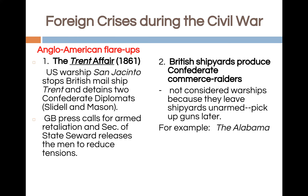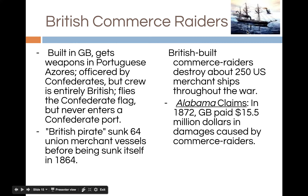Foreign Crisis During the Civil War: The Trent affair occurred in 1861, when a Union warship stopped a British mail steamer, the Trent, and removed two Confederate diplomats who were heading to Europe. Britain started to send troops into Canada in order to prepare for any Union backlash. President Lincoln freed the Confederate prisoners. The British shipyards were unknowingly producing Confederate commerce raiders — the British ships left their ports unarmed, picked up weapons elsewhere, and were then used to capture Union ships. One notable commerce raider of the Confederacy was the Alabama.